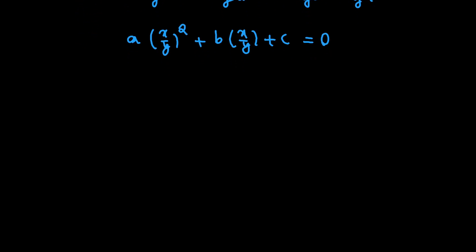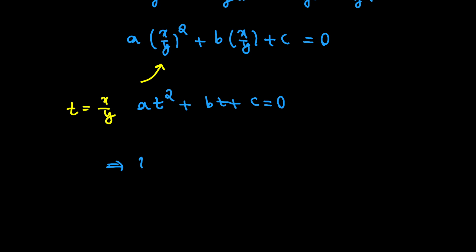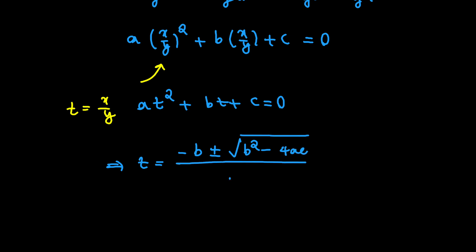Notice that we can replace x over y with t. If we do that, we get a quadratic equation in terms of t, and we can easily solve for t using the quadratic formula: negative b plus or minus square root of b squared minus 4ac, all divided by 2a. This gives us a nice relation between x and y.